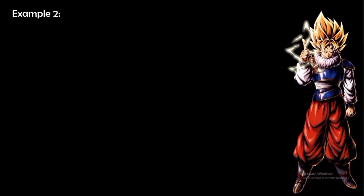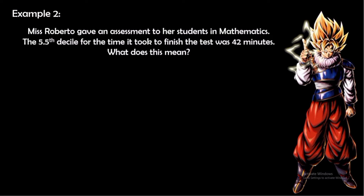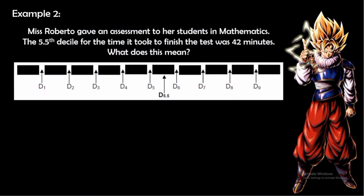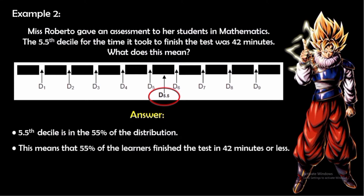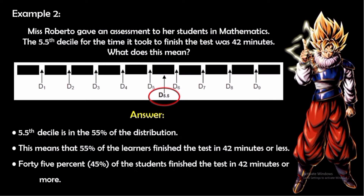Example 2: Ms. Roberto gave an assessment to her students in mathematics. The 5th decile for the time it took to finish the test was 42 minutes. The 5th decile is at the 50% of the distribution, meaning 50% of the learners finished the test in 42 minutes or less, and 45% finished in 42 minutes or more.